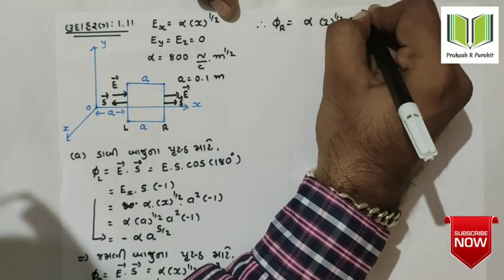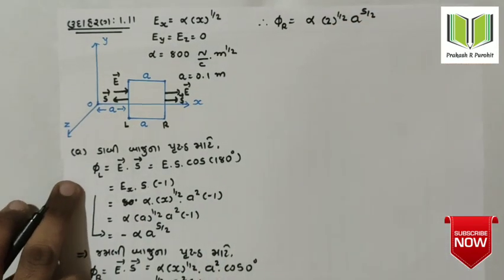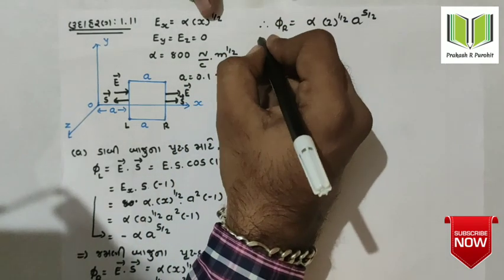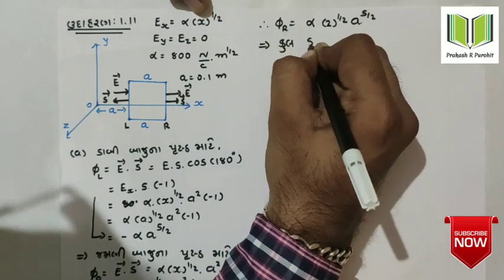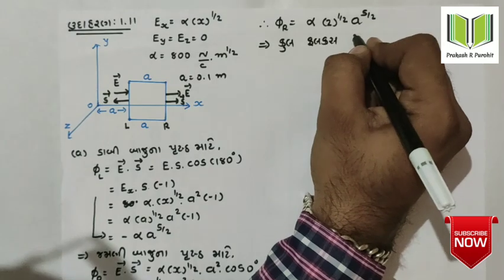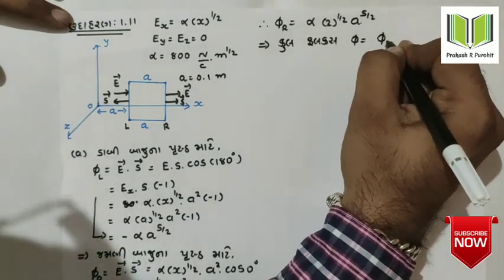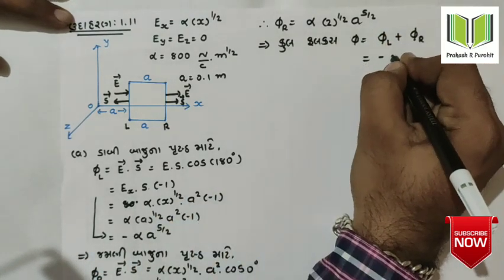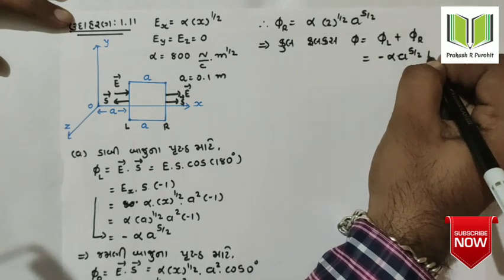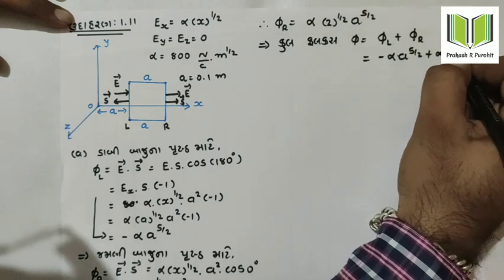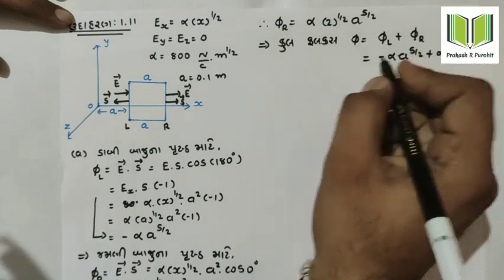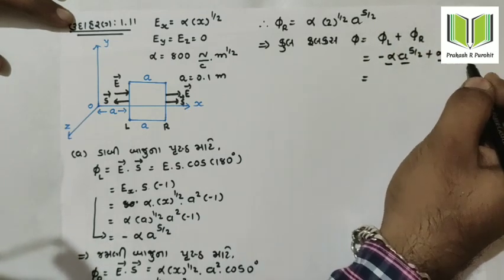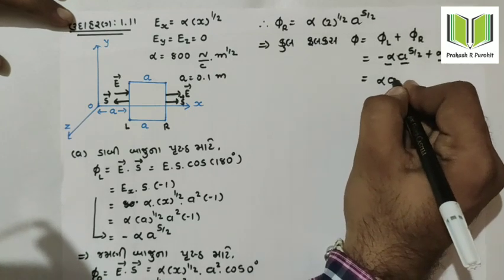The answer is 1, so 2a is equal to 1/2 and the answer is 1/(2a). This is the flux of the left and right side. The total flux: left side is minus alpha·a^(5/2) plus right side alpha·2^(1/2)·a^(5/2). So we take alpha·a^(5/2) as common.